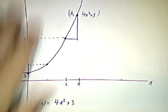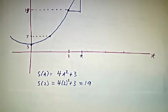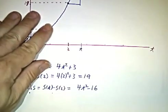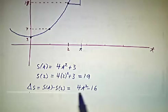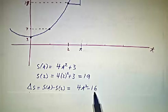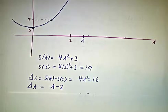So since the position is 4t squared plus 3, and at time 2 we were at position 19, that's 4 times 2 squared plus 3, the change in position is the new position minus the old, so that's 4t squared plus 3 minus 19, so that's 4t squared minus 16. And the amount of time it took was t minus 2.